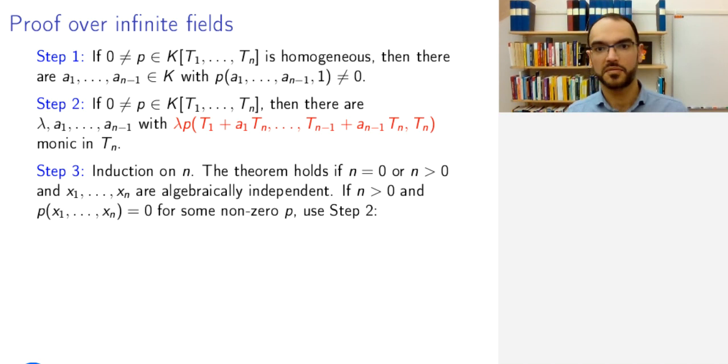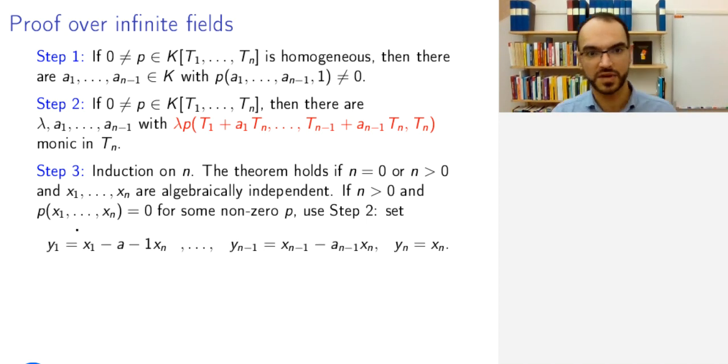So the main work is when we have a positive number of generators and they satisfy some polynomial equation for some non-zero polynomial p. Then we can make use of step two. How do we do that? We replace our generators x1 to xn by these: y1 equals x1 minus a1 xn and so on. So the sort of dual of this thing, we subtract where we add it. So our x1 will be related in this fashion and we leave yn as xn.